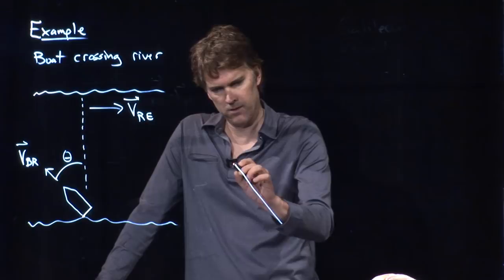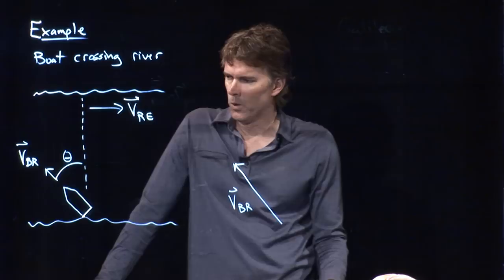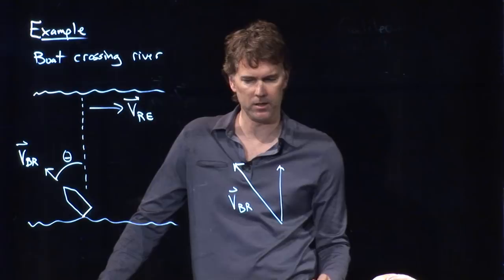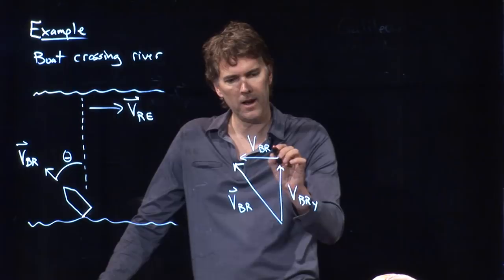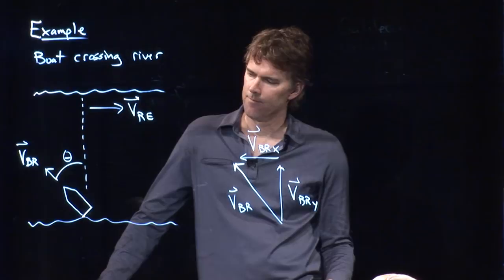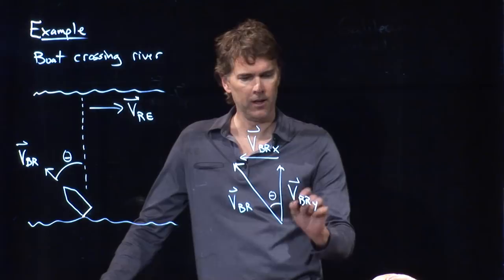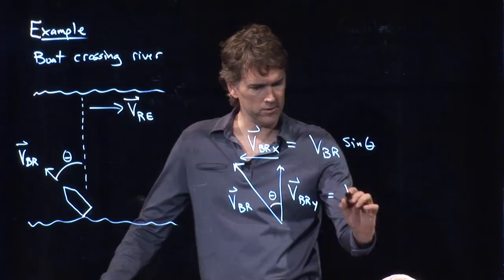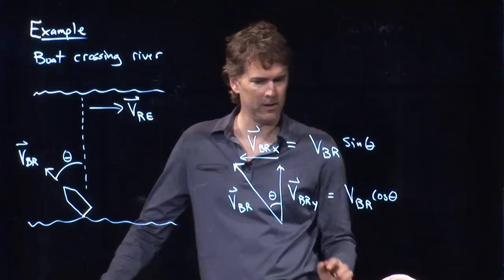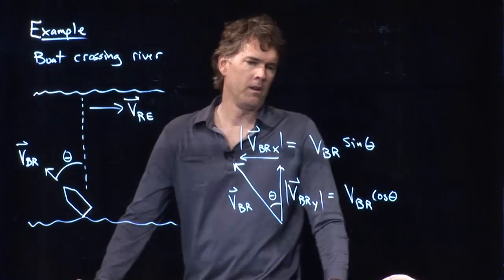VBR is pointing out like that. Which means there's two components to it, right? There is some component in that direction, VBR, we'll call it Y. And there is some component in that direction, VBRX. This one is, of course, the sine component if this is theta. This one is the cosine component. So this is VBR sine of theta. This is going to be VBR cosine of theta. And if we're just thinking about the speeds there, we can go like that. All right.